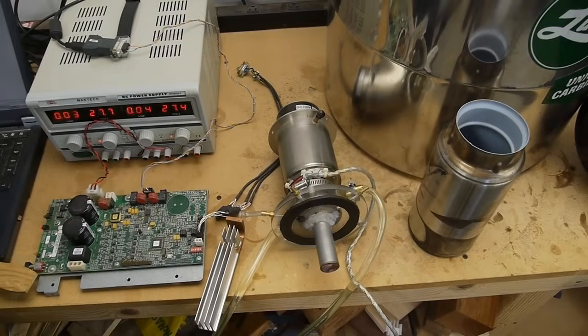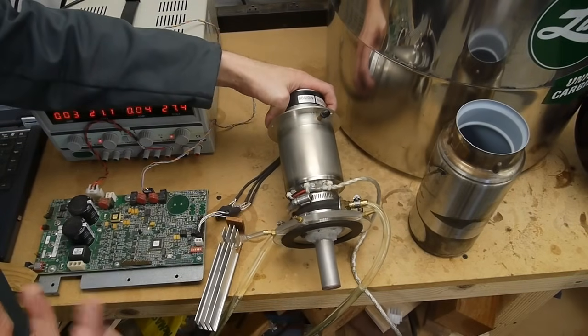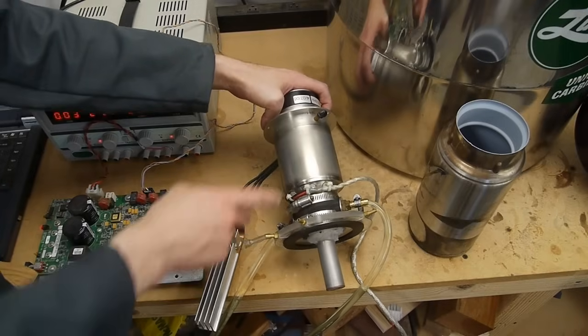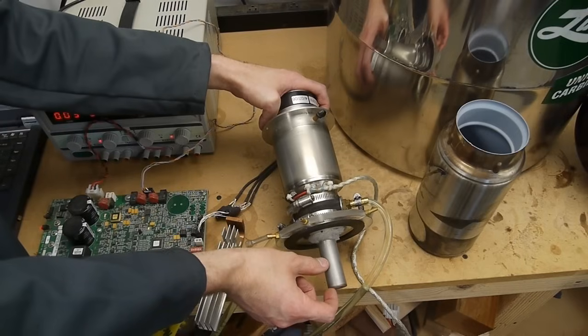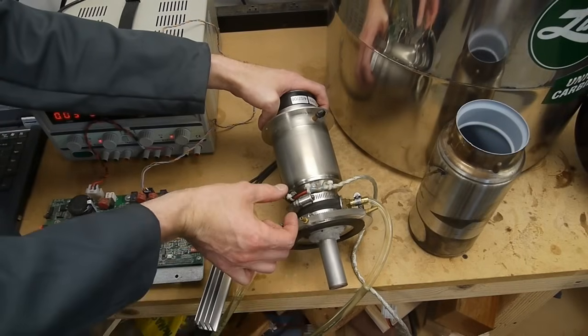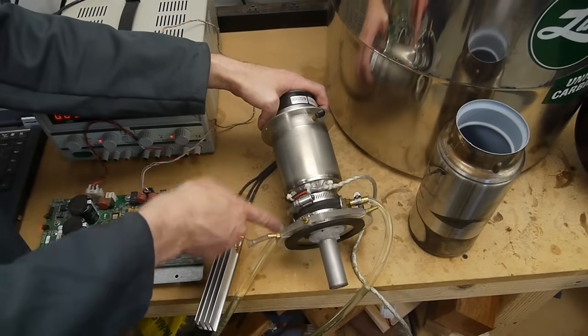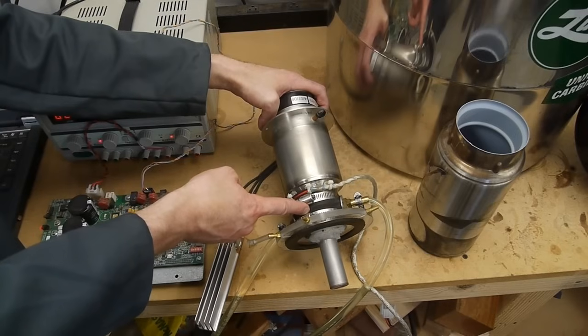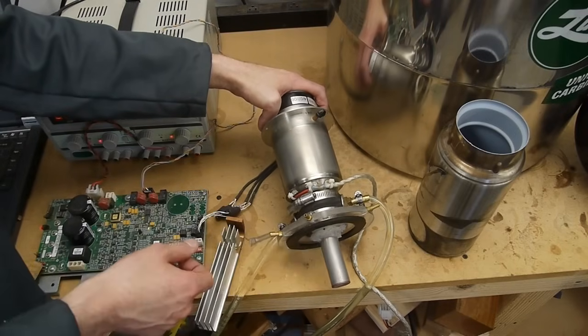This Sterling cycle cryo cooler works on the principle that if you compress a gas it gets warm and if you expand the gas it gets cold. So what it does is it moves working gas which is helium in this case down to the tip of the device where it expands it so the tip gets cold and then it moves that chunk of gas back up to here and compresses it so it gets warm. We can see the water cooling lines here are where the heat is rejected and the tip here is where it gets cold.